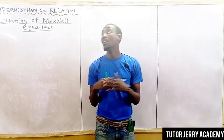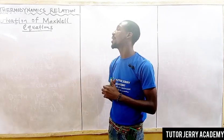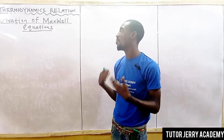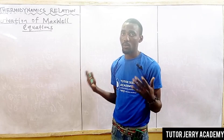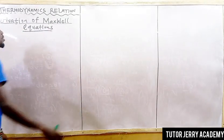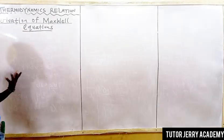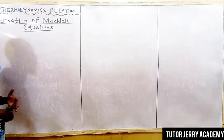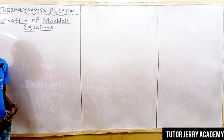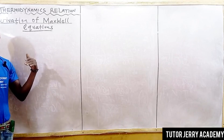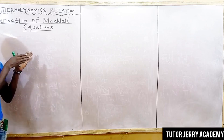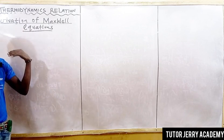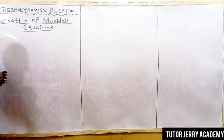Welcome to our next class on thermodynamic relations. The next topic is the derivation of Maxwell equations. To derive the Maxwell equations, you have to remember three things: entropy, the Helmholtz function, and the Gibbs function. You can watch our tutorial on this theory — the equations I'm going to write, we have talked about them, we'll prove them, and we'll look at some examples on our channel.